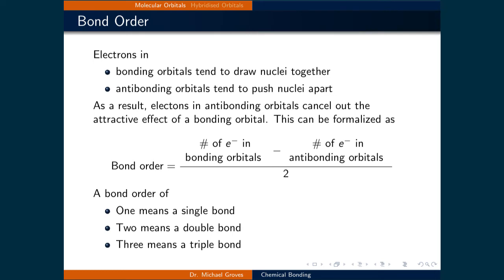As we have seen, bonding orbitals tend to draw nuclei together, and antibonding orbitals tend to push nuclei apart. We can set up a simple relationship: if we assume the effects of bonding orbitals are cancelled out by antibonding orbitals, we can predict bond strength by looking at the net number of electrons in bonding orbitals. This is formalized as: bond order = (number of electrons in bonding orbitals − number of electrons in antibonding orbitals) / 2. A bond order of 1 means a single bond, 2 means a double bond, and 3 means a triple bond.